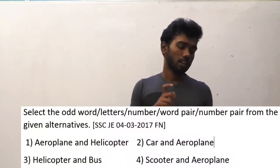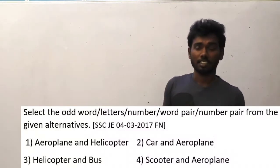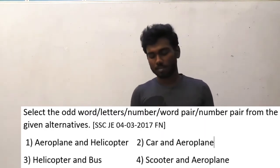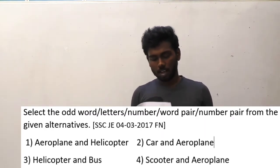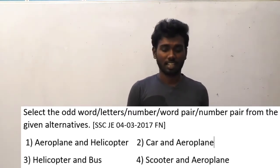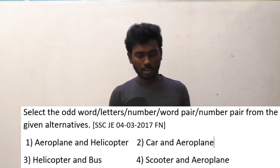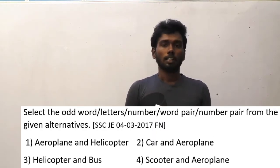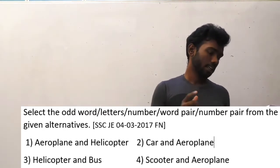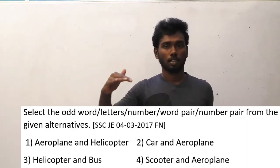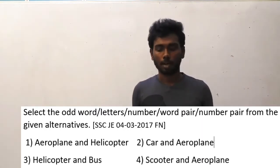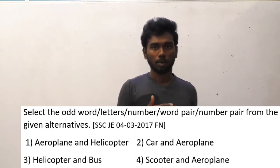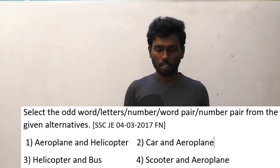The next question asks to select the odd word pair from the given alternatives, from the same SSCJE paper. The options are aeroplane and helicopter, car and aeroplane, helicopter and bus, scooter and aeroplane. In each option except the first, there is one road and one air mode of transport. But in the first option alone, both aeroplane and helicopter travel in air. So that is the odd option — the answer is aeroplane and helicopter.